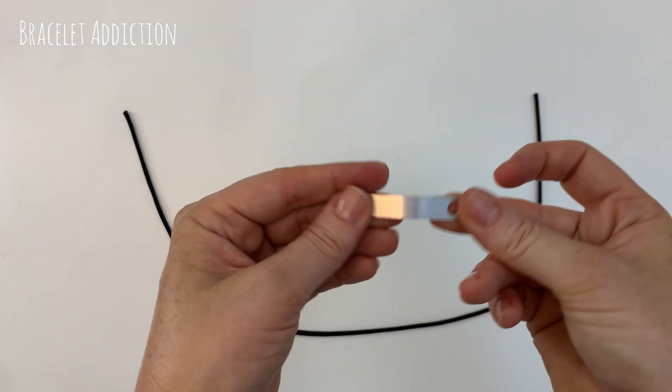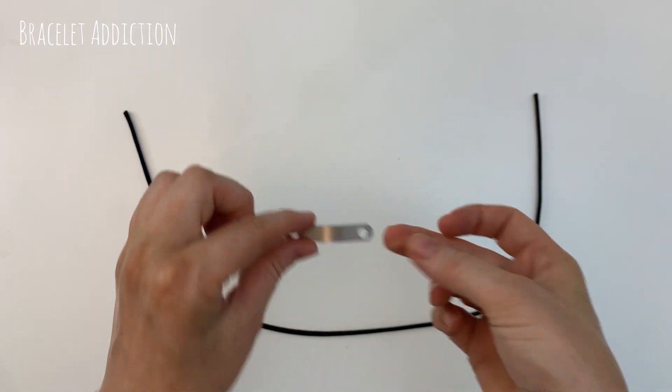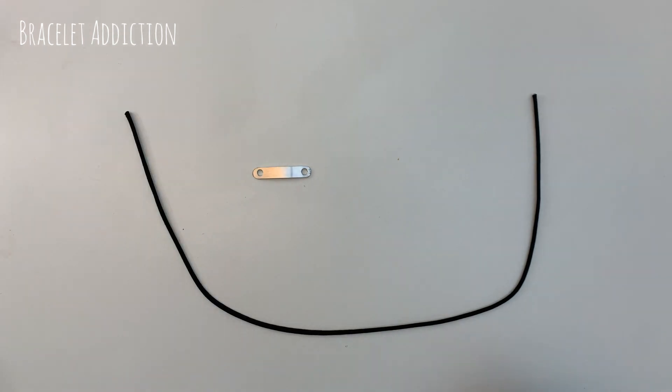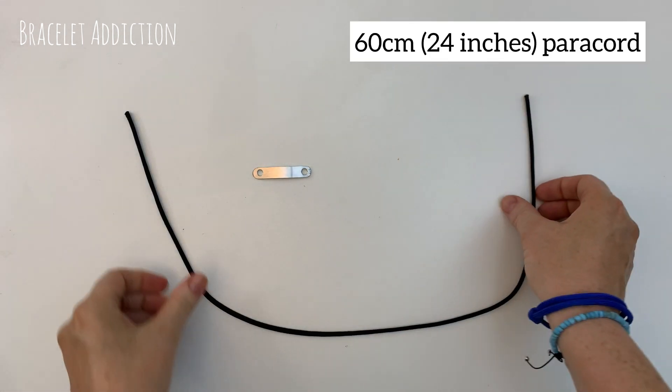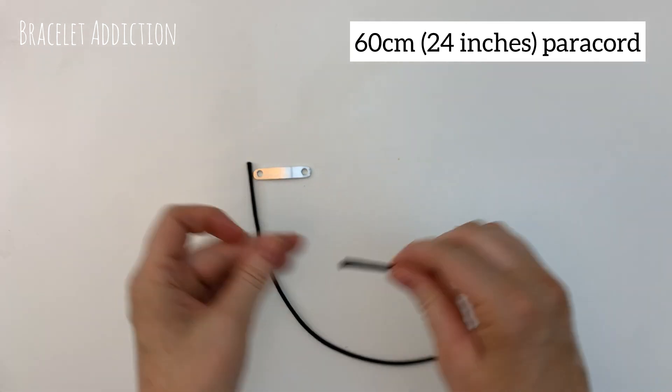I've got a little metal bar here that I'm going to hand stamp with something later. You can use whatever you like for this design as long as it's got a hole on each side. For our design today we're using 60 centimeters of 4 millimeter paracord.